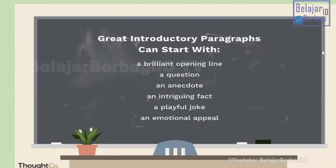The opening line could be a question, drawing the reader into your piece of writing. An anecdote would be something that happened — it could be fictional, true, or a personal experience. It could be an intriguing fact, something very interesting, or something entertaining like a playful joke — so it could be something funny, you could start with humor. It could also be an emotional appeal, something that appeals to the reader's emotions.